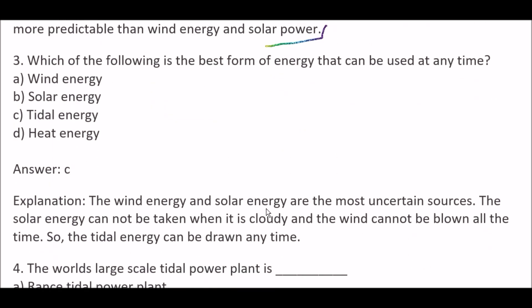Next question: Which of the following is the best form of energy that can be used at any time? Option A, wind energy; Option B, solar energy; Option C, tidal energy; Option D, heat energy. Right answer is Option C, tidal energy. Wind and solar energy are the most uncertain sources — solar cannot be taken when it's cloudy and wind cannot blow all the time — so tidal energy can be drawn at any time.